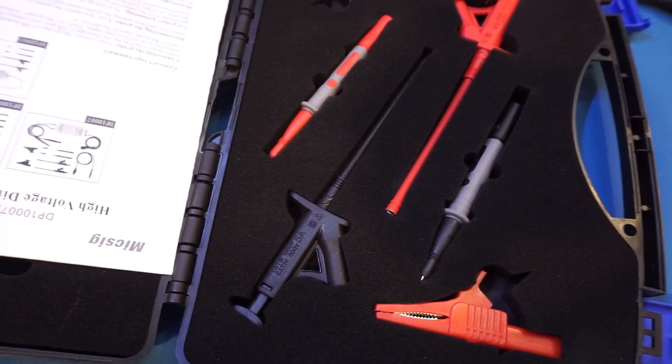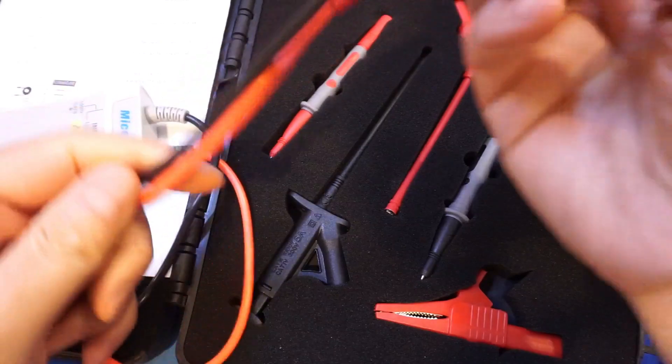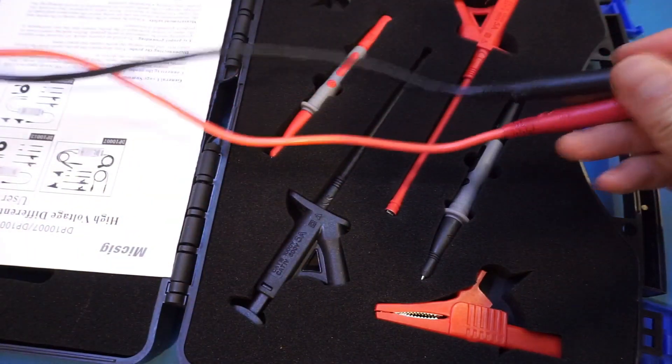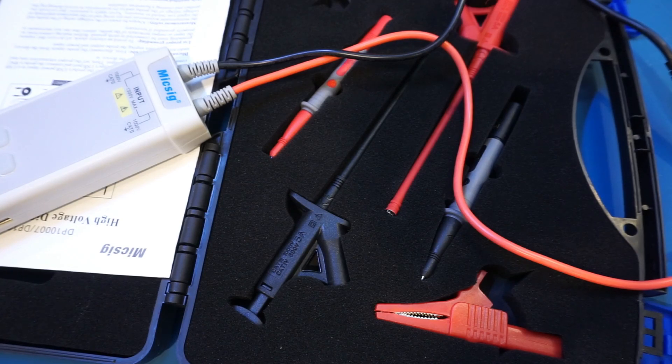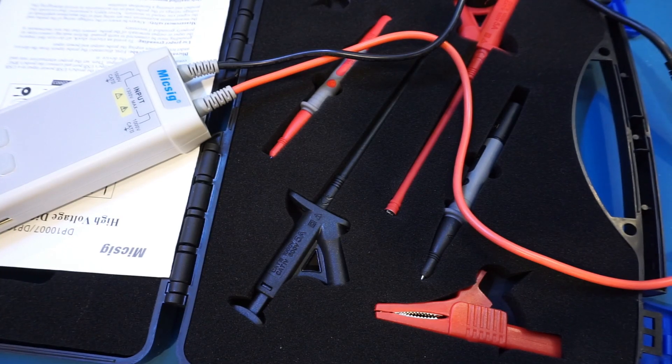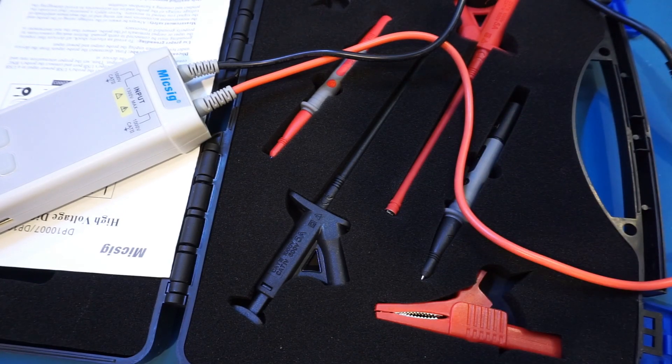Now, as you probably noticed, the differential probe actually does not have a BNC input, rather it just has these two rather long wires here. So this probe is probably best suited for measuring frequencies lower than 10 MHz due to the stray capacitance these wires introduce. We will take a look at that shortly as well.